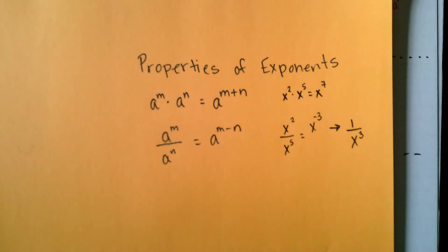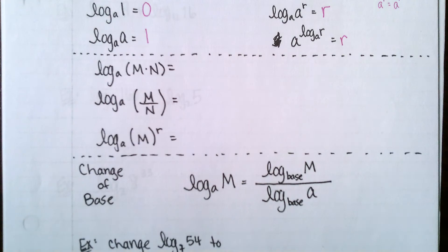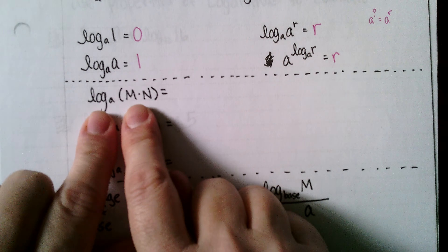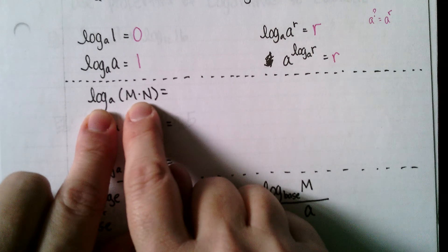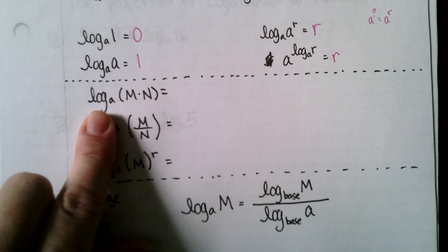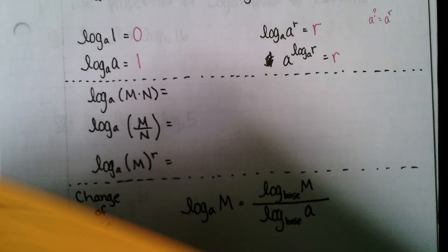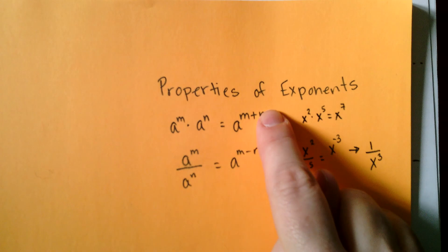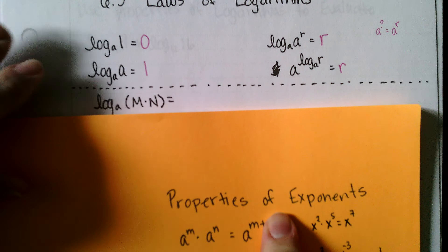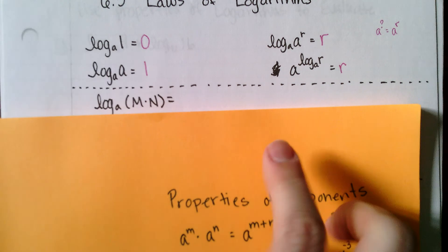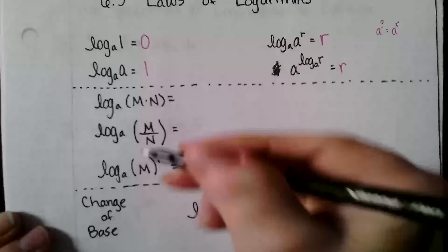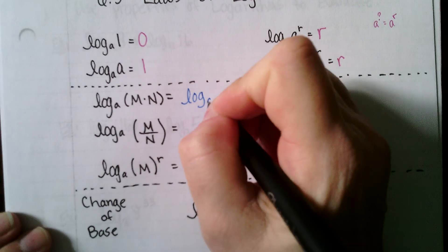Since logarithms are inverses, they behave similarly but in the opposite manner. I'm going to start with one logarithm that has a product in the argument, and that's going to separate into adding two logarithms. With exponents I started with two bases multiplied and got addition; now I'm starting with a single log having multiplication in the argument and ending up with two logs that are added.